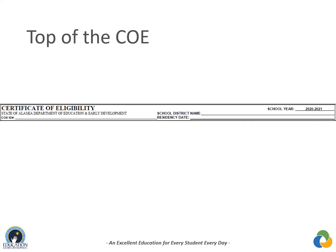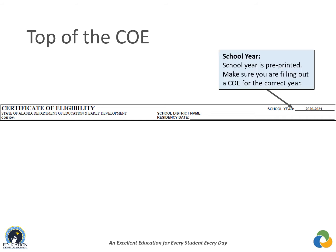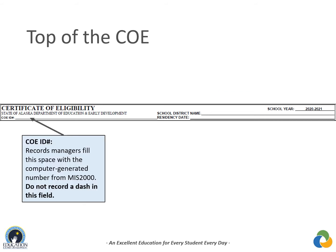The top of the COE identifies the form as the Certificate of Eligibility for the state of Alaska. The current school year is displayed in the upper right corner — make sure you are entering the COE for the correct school year. The COE ID is an auto-generated number created by MIS 2000. For COEs created in the web system, this field does not appear during entry but will display once viewed in PDF format. For COEs completed in the fillable PDF, this number is generated once entered into MIS 2000. Records managers are responsible for filling out this field on the hard copy COE.